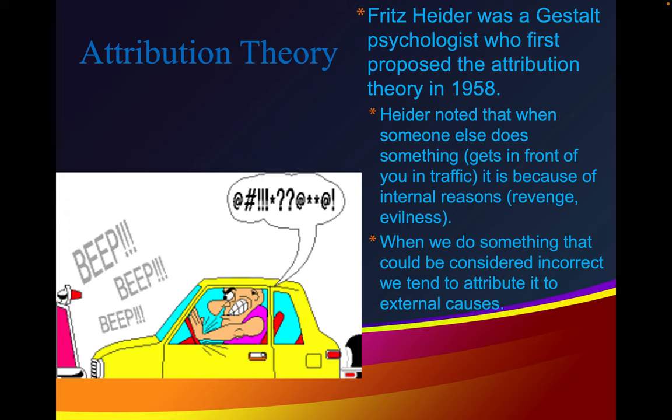Fritz Heider was a gestalt psychologist who first proposed attribution theory in 1958. Heider noted that when someone else does something — like cutting in front of you in traffic — we attribute it to internal reasons such as malice or evilness. But when we do something that could be considered incorrect, we tend to attribute it to external causes.